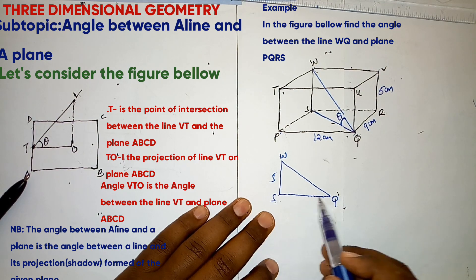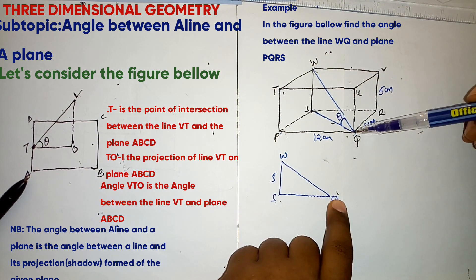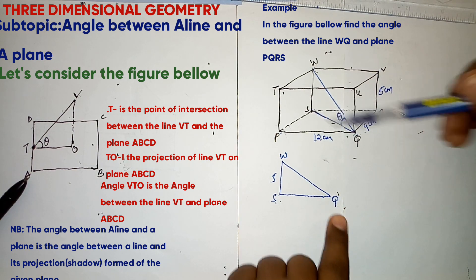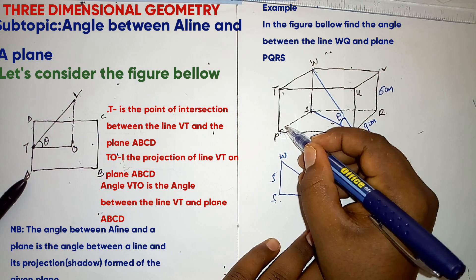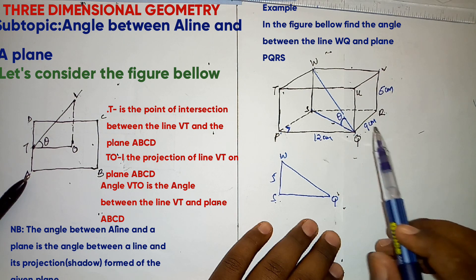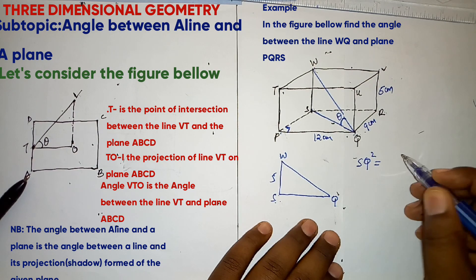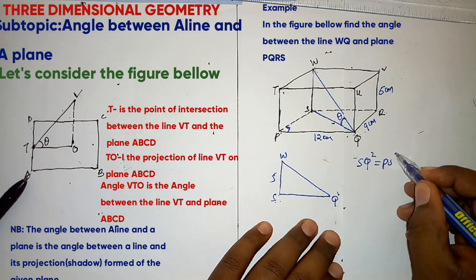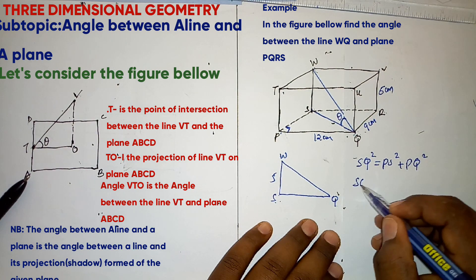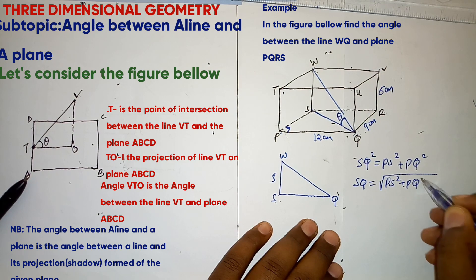Now, can we get SQ? Now SQ is the diagonal of the plane PQRS which in this case is the hypotenuse. So if we take that to be the right angle triangle, then to get SQ, SQ squared should be equal to PS squared plus PQ squared. So SQ will be equal to square root of PS squared plus PQ squared.